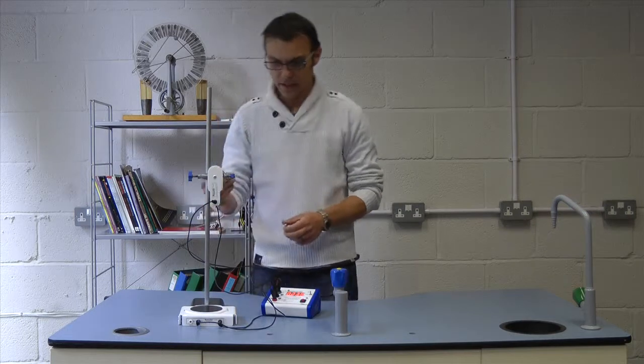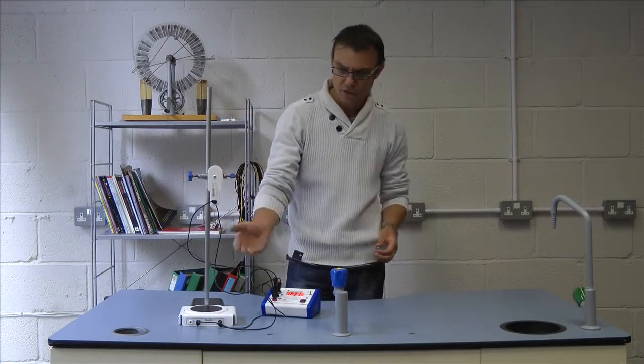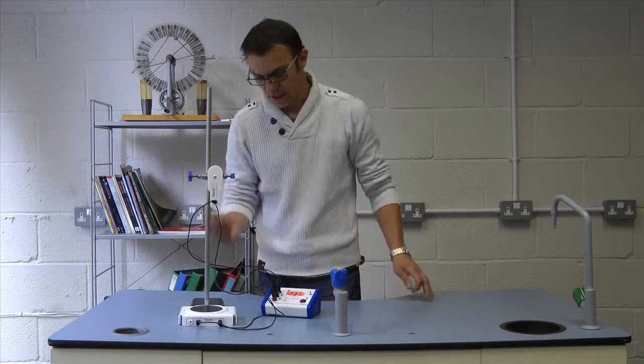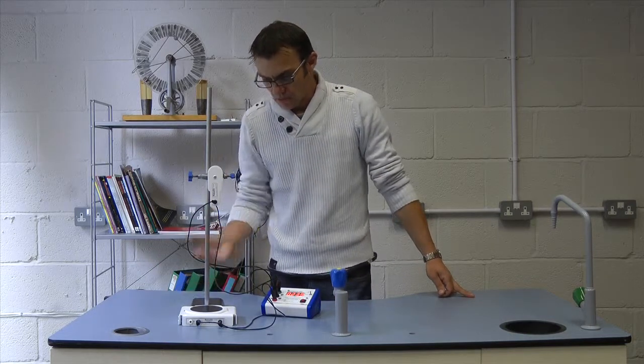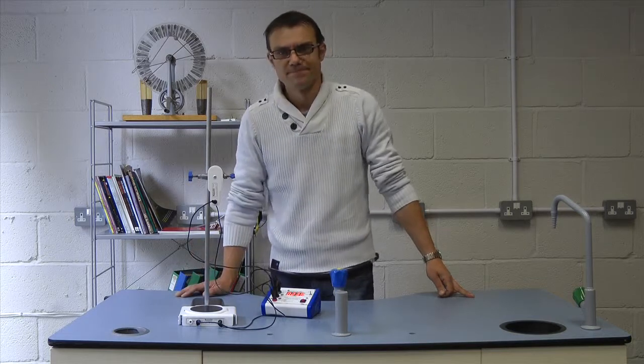Now obviously you can measure the height here. Take a set of readings for H or S. You'll have a set of readings for time taken. And using equations of motion, you can calculate the value for G. GoScience G by Freefall Unit. Thanks for watching.